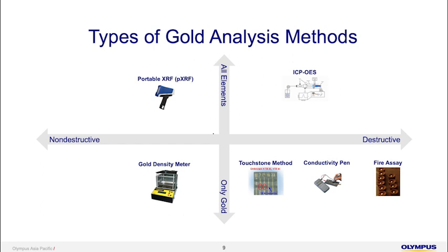ICP-OES is also a destructive method. You use acid digestion to digest the sample, then run it through the ICP-OES, which gives you the full composition — gold, copper, nickel, and zinc concentration if calibrated for them. Similar to fire assay, the sample has to be digested using acid, so you cannot recover the material. I always tell customers that with ICP or fire assay, you are not just paying for the test itself — you are also losing gold, sometimes as much as 0.5 to 1 gram, which has real value.